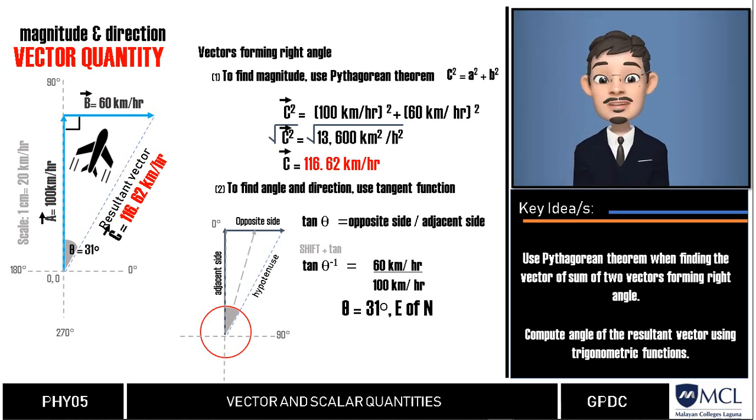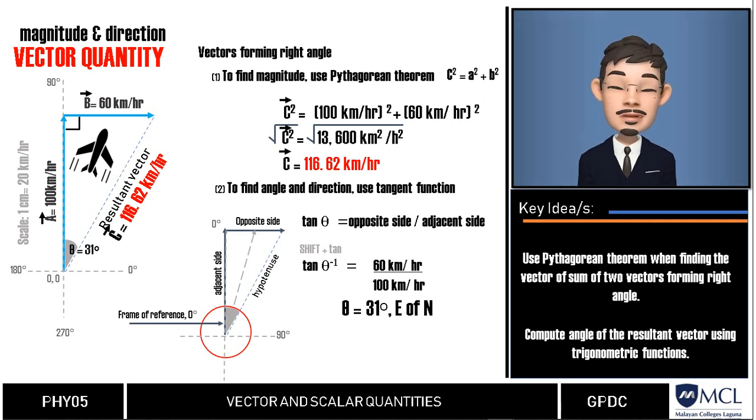Now, a lot of you would ask, Sir, why is it east of north and not north of east? Let us look at the graph that we did. Our zero degree is in north axis and because of the strong wind, the airplane flew 31 degrees east. But since our frame of reference, that is our zero angle is north, then we say that our final angle and direction is 31 degrees east of north.